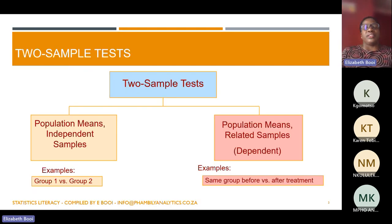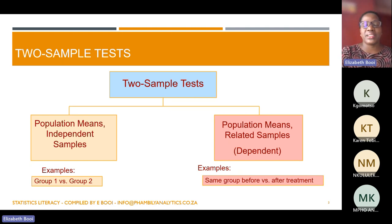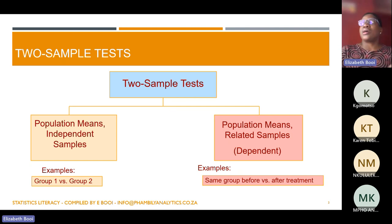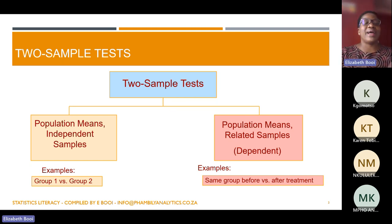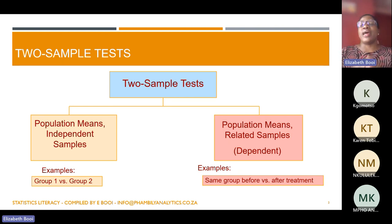In terms of the two-sample tests we're going to look at, you need to be able to identify whether you have two independent samples, meaning you have two groups. It can be two variables: boys and girls, males and females, single and married, South Africans and Zimbabweans — things like that. Those two are independent; one has no bearing on what the other is doing, so they are not related to one another.